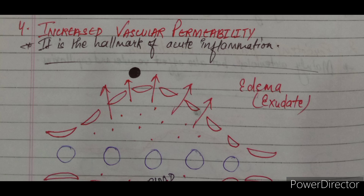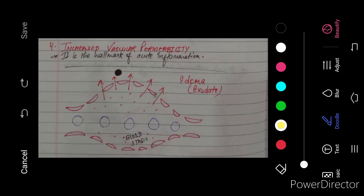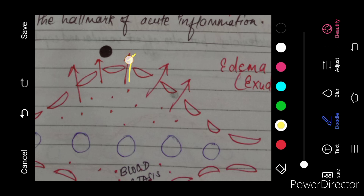For the leakage of WBCs, there should be certain pathways — we can say holes — through which they can go out. In previous figures we have seen continuous endothelial cells without any gaps between them. So how will WBCs come out without any gaps? The gaps are created in the lining of blood vessels, that is endothelial cells. Between the endothelial cells, gaps are formed, and this is known as vascular permeability. In this figure, please appreciate the gaps between the endothelial cells.